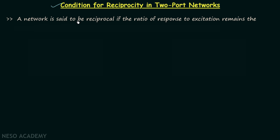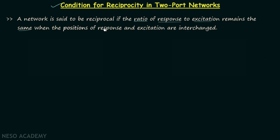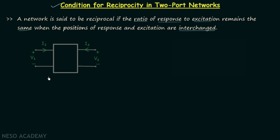A network is said to be reciprocal if the ratio of response to the excitation remains the same when the positions of response and excitation are interchanged. Now we will find out the condition for reciprocity and for this I have taken this two-port network.